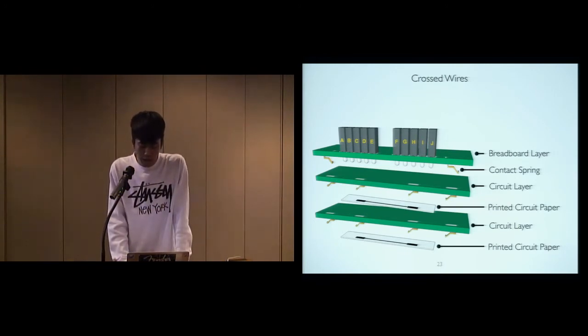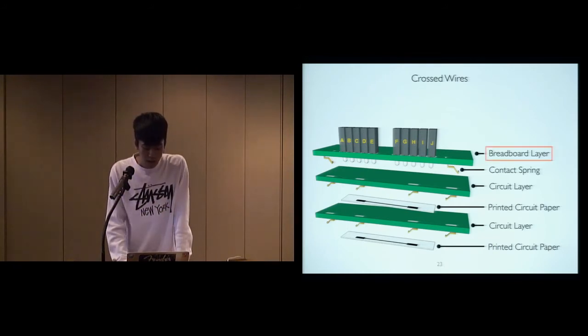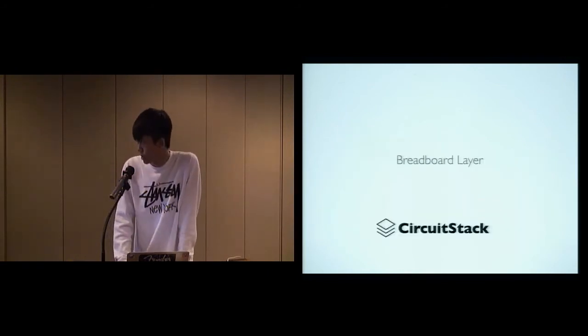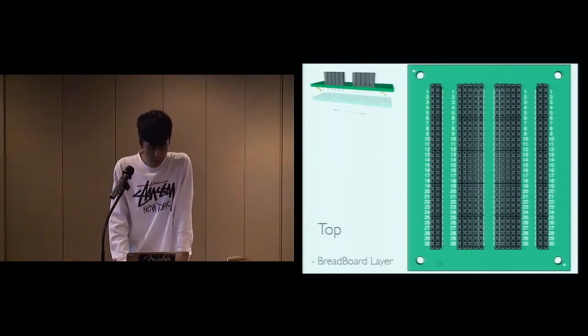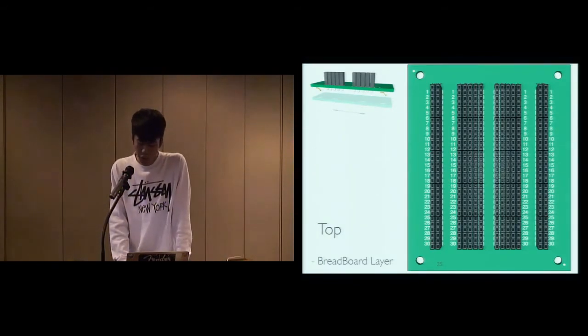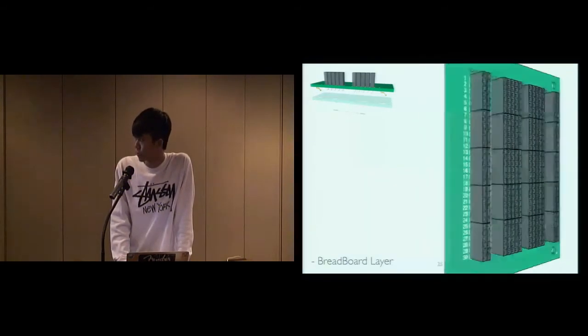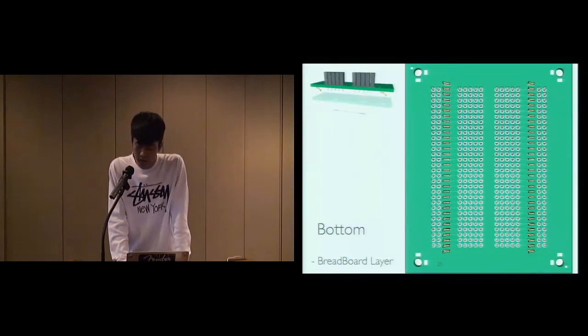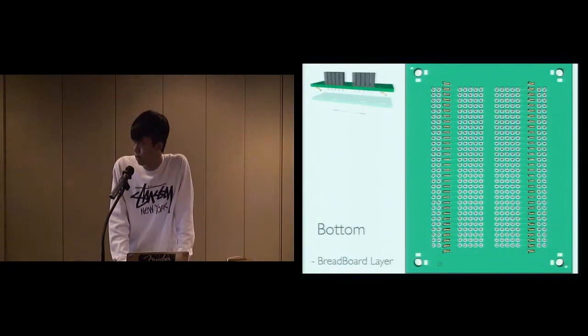There are two different kinds of layers in our design: the breadboard layer and the circuit layer. Let's dig into those layers deeper. The breadboard layer. This is the top side of it. Its functions and layout are exactly the same as a regular breadboard. And the bottom side with contact springs below each row to deliver the signals.